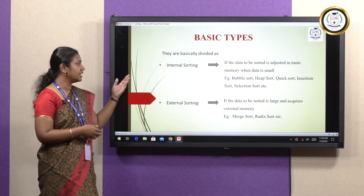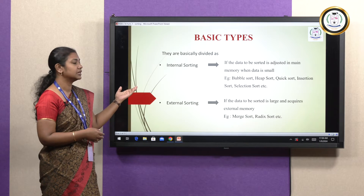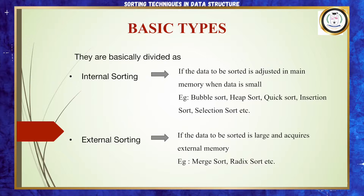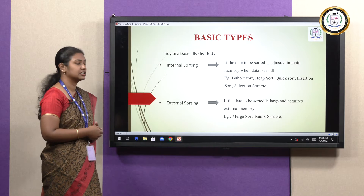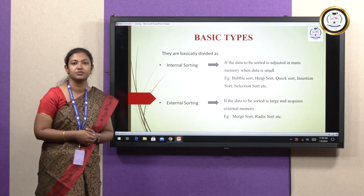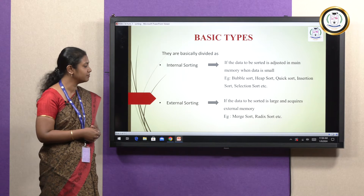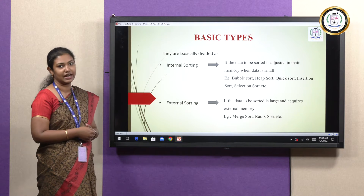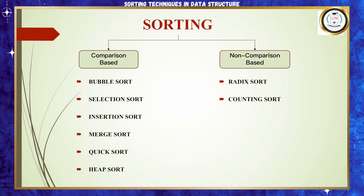Some examples of internal sorting are bubble sort, heap sort, quick sort, insertion sort and selection sort. Whereas in external sorting, some examples are merge sort and radix sort.